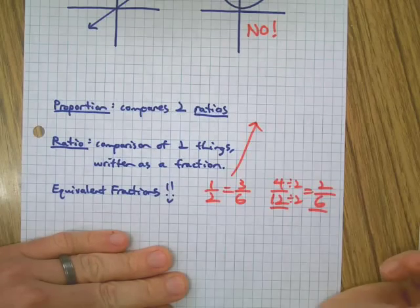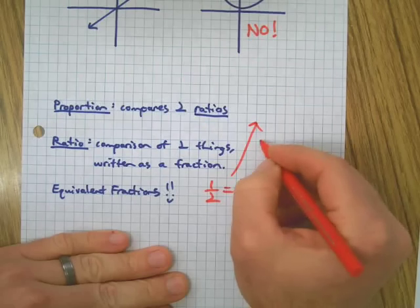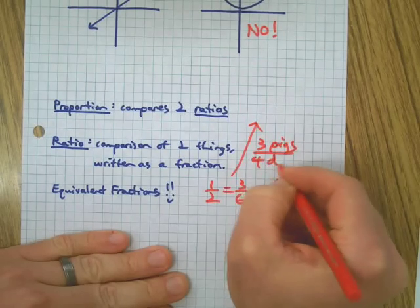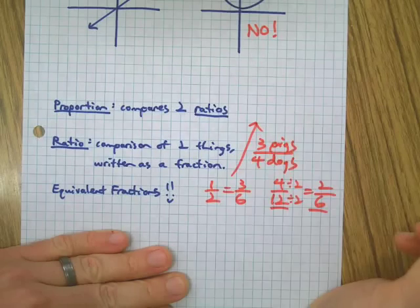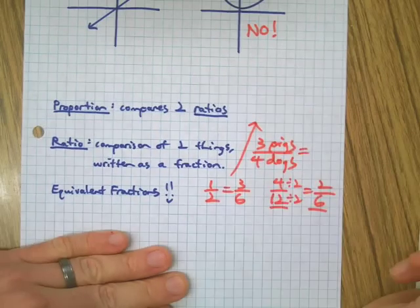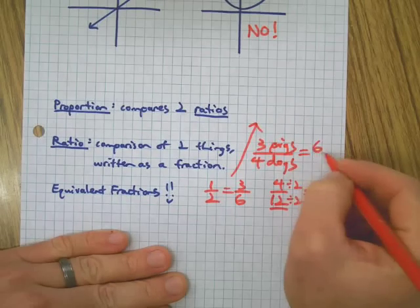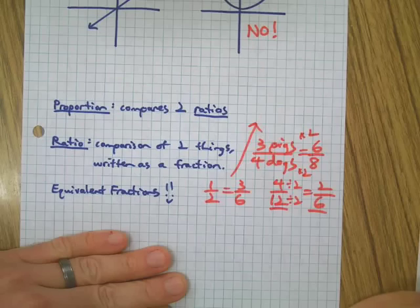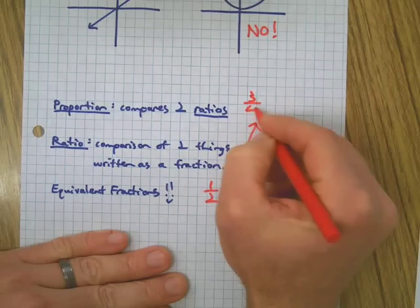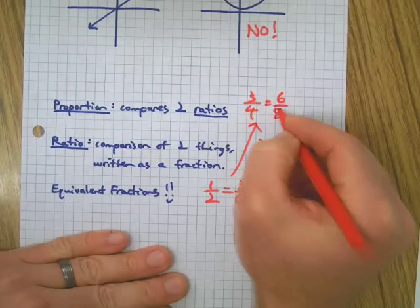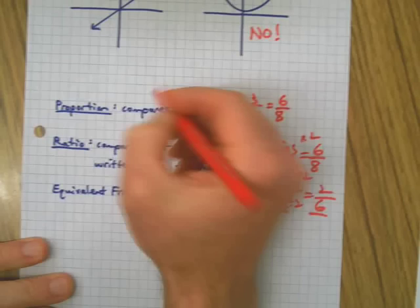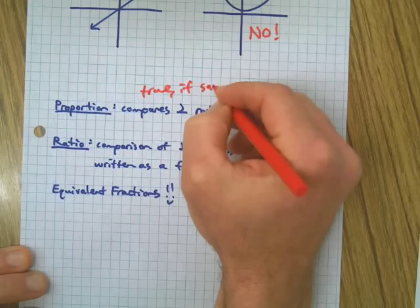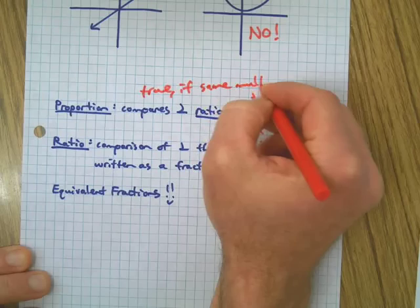Okay, so here's a ratio: three pigs, four dogs. A proportion would simply be if we made an equivalent fraction out of that. For example, if we had twice as many pigs and twice as many dogs, there's a proportion. So it all builds. Here's a proportion: a proportion is true if we have the same multiplier top and bottom.